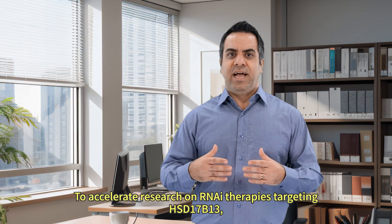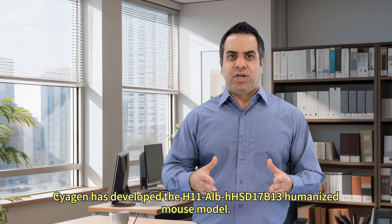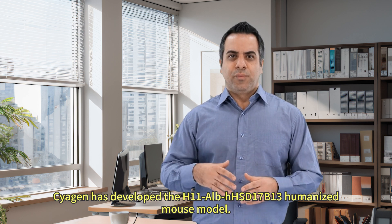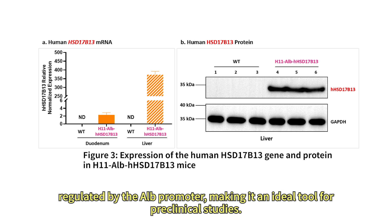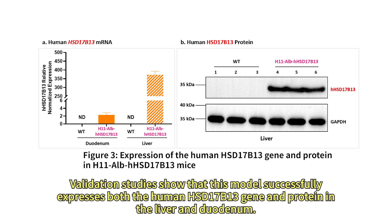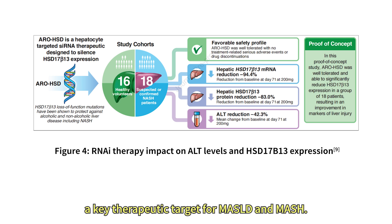To accelerate research on RNAi therapies targeting HSD17b13, Sciogen has developed the H11-Alb-HHSD17b13 humanized mouse model. This model expresses the human HSD17b13 gene in the liver, regulated by the ALB promoter, making it an ideal tool for preclinical studies. Validation studies show that this model successfully expresses both the human HSD17b13 gene and protein in the liver and duodenum. The H11-Alb-HHSD17b13 model offers a unique platform for testing RNAi therapies targeting human HSD17b13, a key therapeutic target for MASLD and MASH.